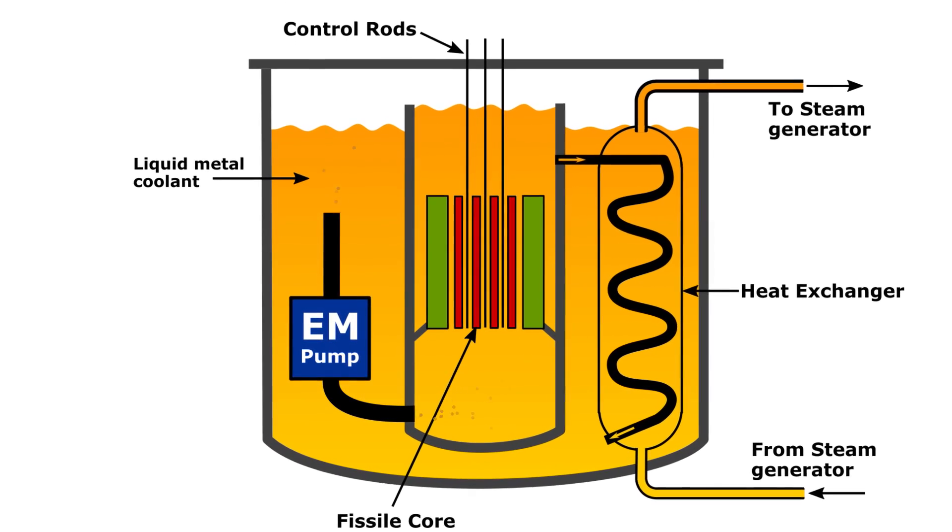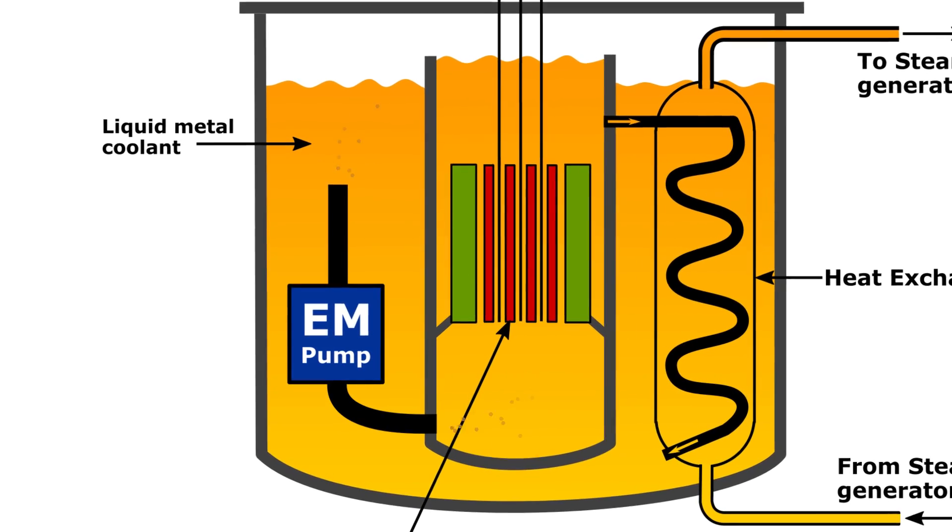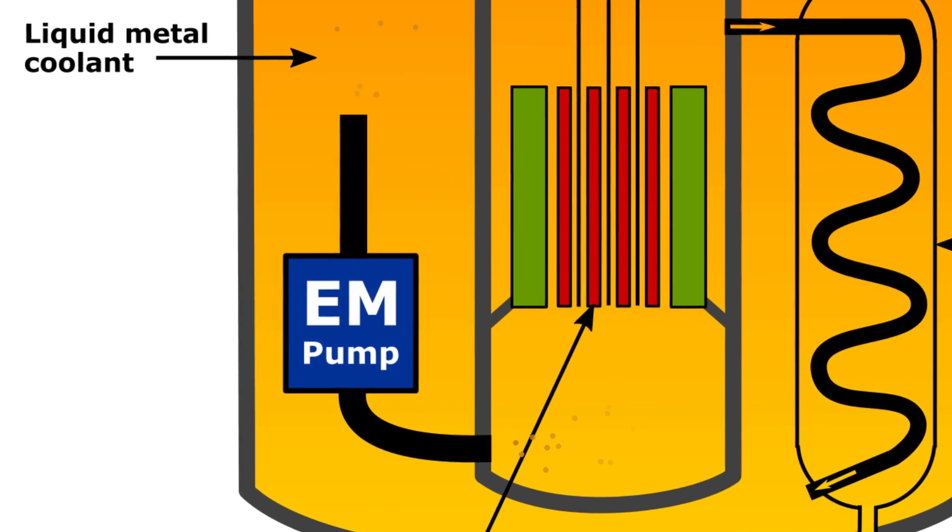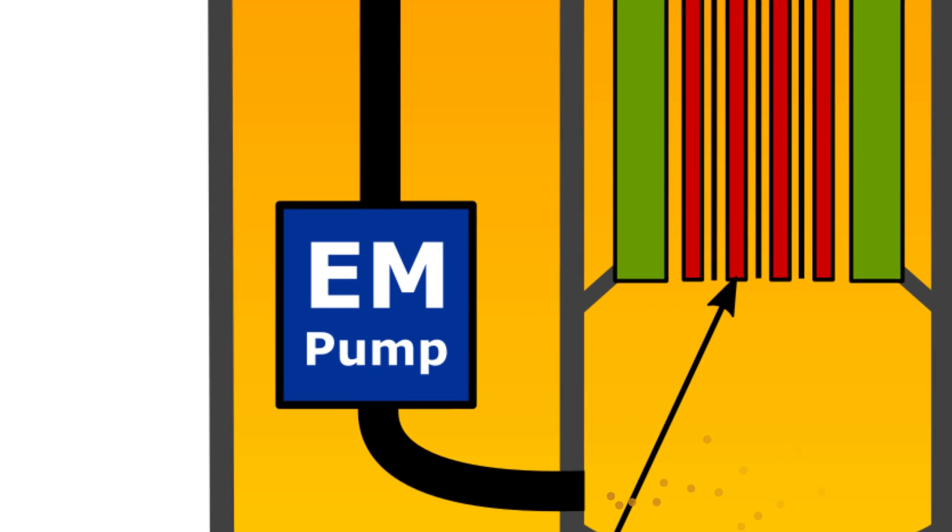There are no moving parts. And because of this, EM pumps can be used in environments where a corrosive and conductive fluid or high temperature and conductive fluid needs to be pumped.